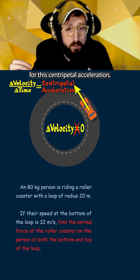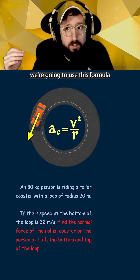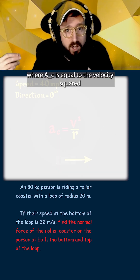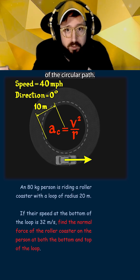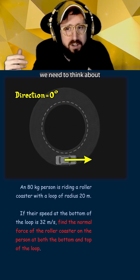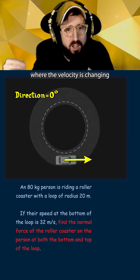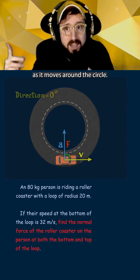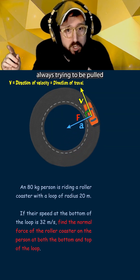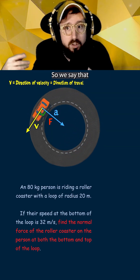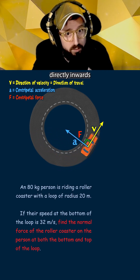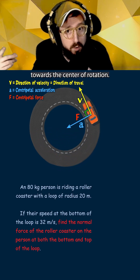If we wanted a value for this centripetal acceleration, we're going to use the formula where AC is equal to the velocity squared divided by the radius of the circular path. Looking at the direction of this acceleration, we see that the velocity is always being pulled towards the center of the circle. So we say that centripetal acceleration points directly inwards towards the center of rotation.